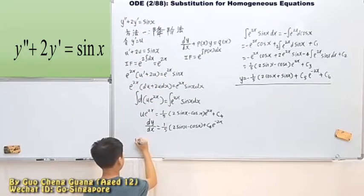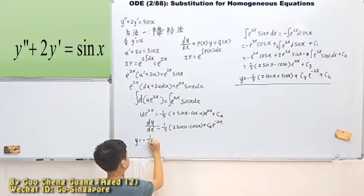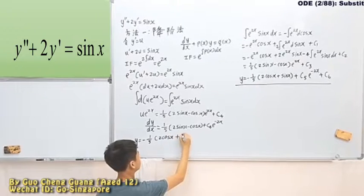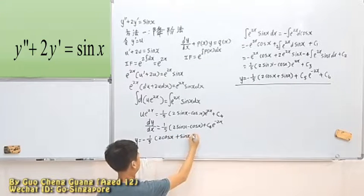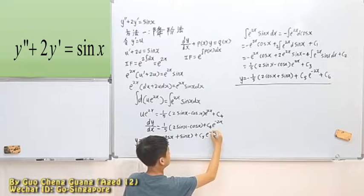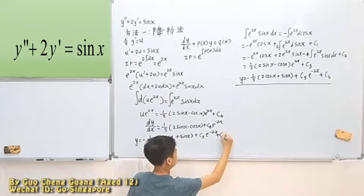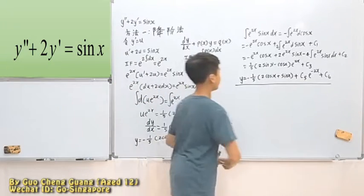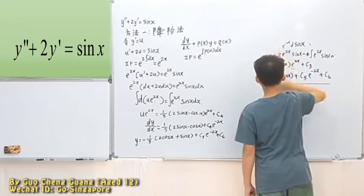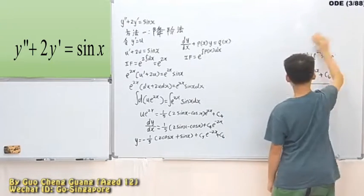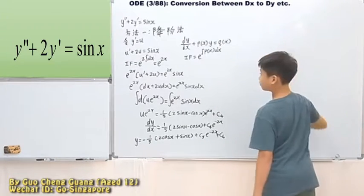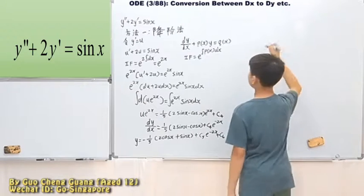But I will need to erase this part. So I'll need to record down the answer. I'll just write it down here first. Okay, so I'll just erase this part. For this time, we are going to use method 2.